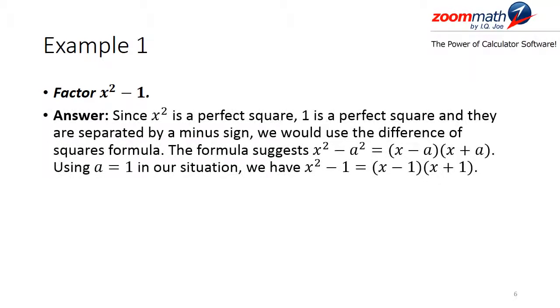Our first example is to factor x squared minus 1. Since x squared is a perfect square, 1 is a perfect square, and they are separated by a minus sign, we use the difference of squares formula. The formula states that x squared minus a squared can be rewritten as (x minus a)(x plus a). Using a equal to 1, we have x squared minus 1 equals (x minus 1)(x plus 1).